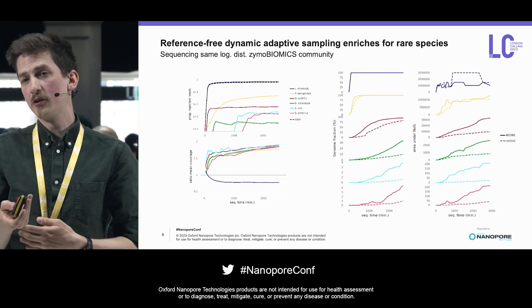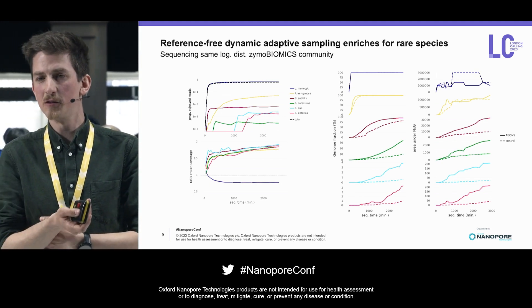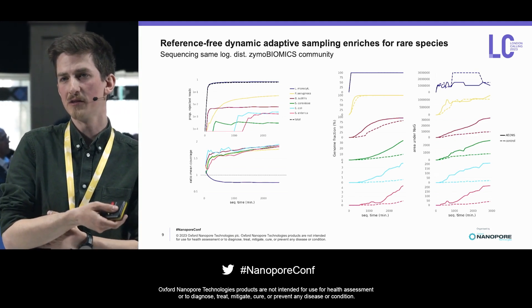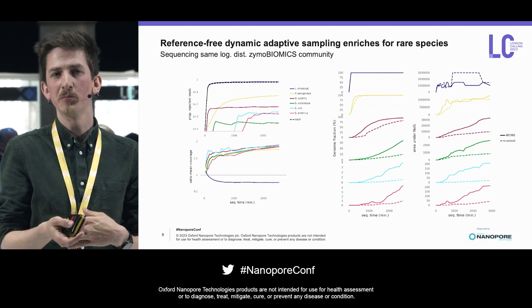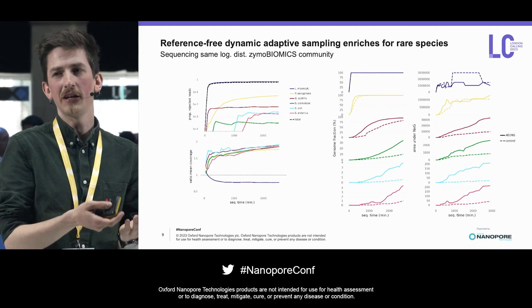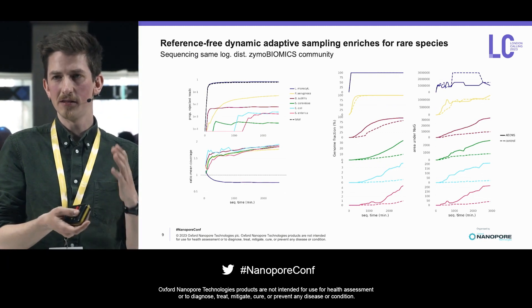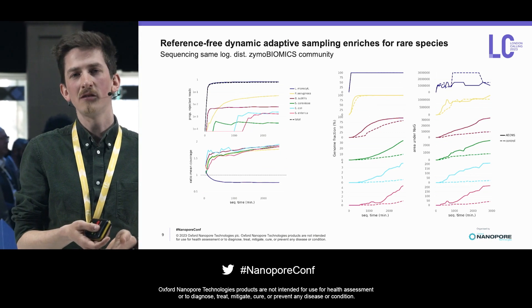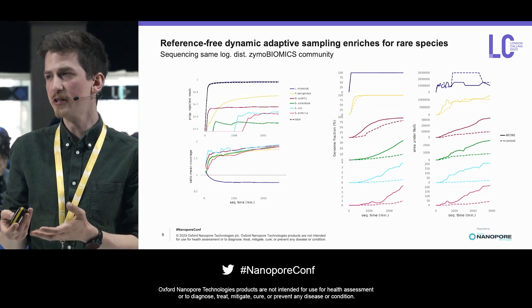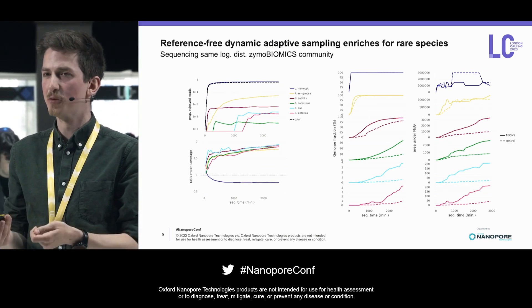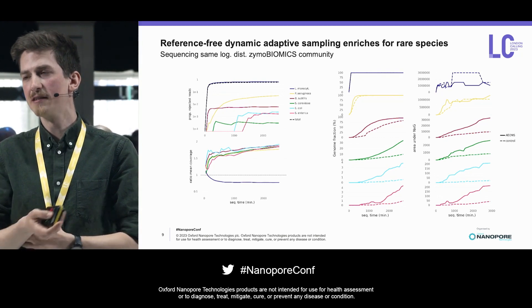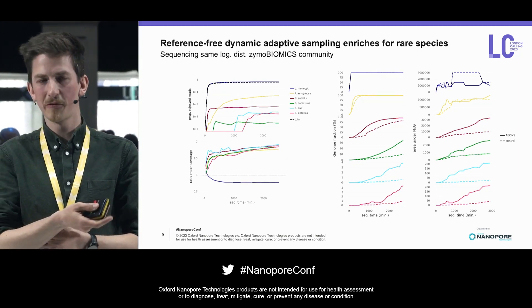When we construct MAGs out of these species at the end of our experiment, we can see that not only do we capture more of the genomes in our MAGs — shown in the plots on the left-hand side — but also that these MAGs are more contiguous in the genomes that we assemble, which is shown here as the area under the NX curve.